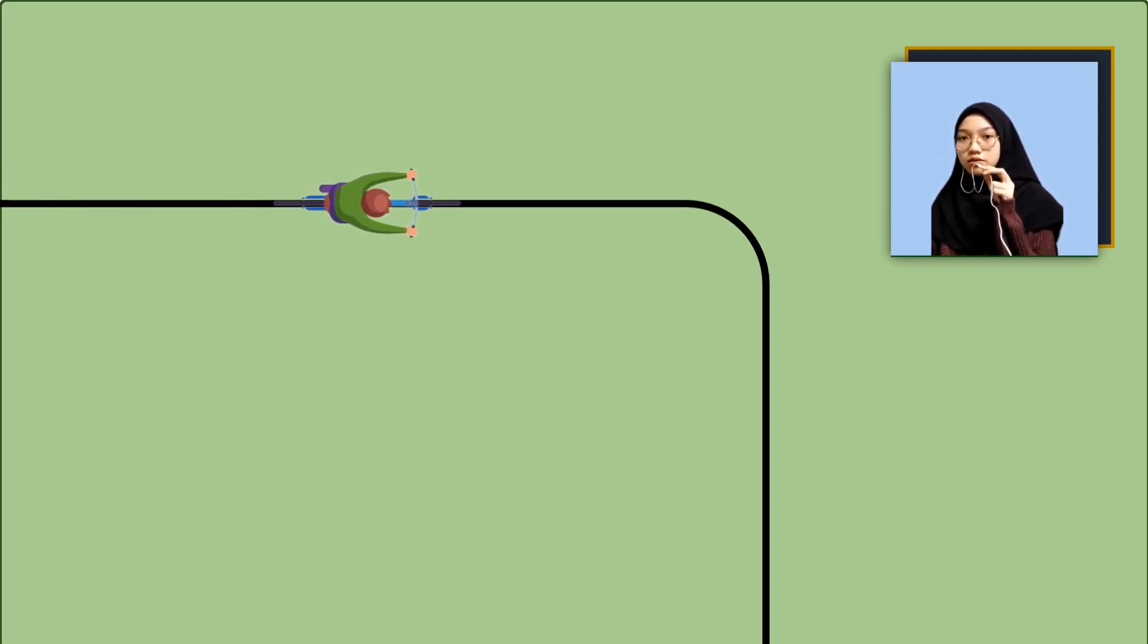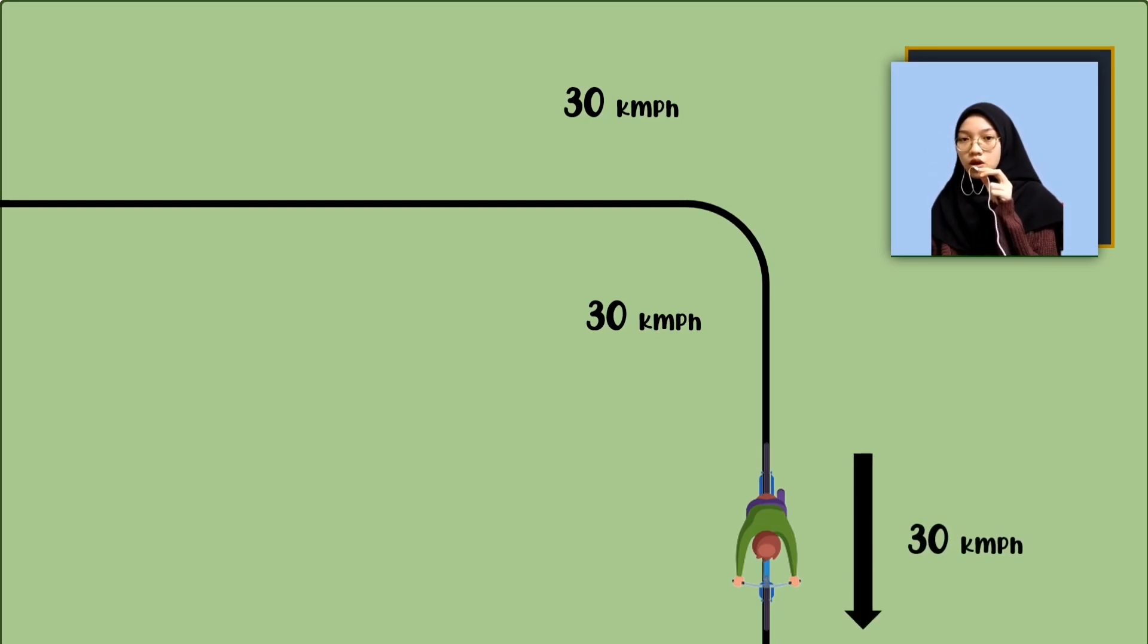In another scenario, assume that a boy is cycling a bicycle at 30 km per hour. Then he turns right at 30 km per hour and continues moving at the same speed of 30 km per hour. Will there be acceleration in this case? Yes, of course. As the direction is changing, the velocity will also change.